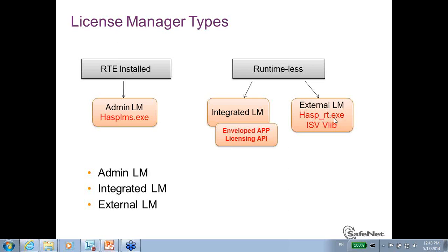Where you can find the ASP RT is very easy. When you envelope an application, in addition to the enveloped application, you will also immediately get an ASP RT that you can provide to your end user. Once you want to create a new external License Manager, just use your enveloper, create a new enveloped application with a new ASP RT, and send it to your end user. This way, it's very convenient to change the License Manager without re-integrating the Licensing API. Only the ASP RT needs to be replaced.